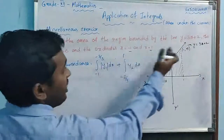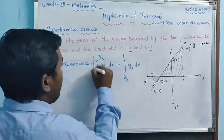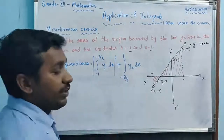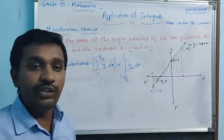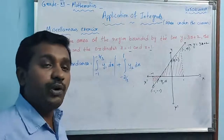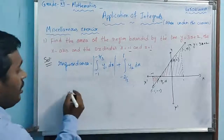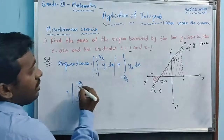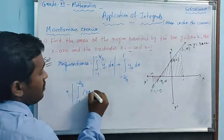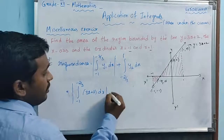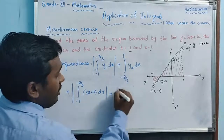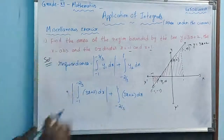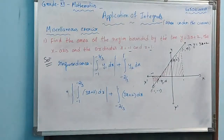We apply the modulus because when the region is below the x-axis it is negative, and area should not be negative. So applying modulus makes it positive. The integration becomes: modulus of the integral from -1 to -2/3 of (3x + 2) dx, plus the integral from -2/3 to 1 of (3x + 2) dx — since it is the same line throughout.